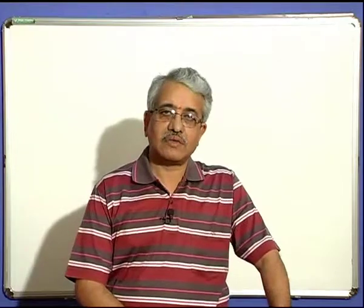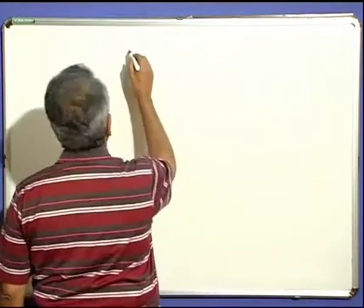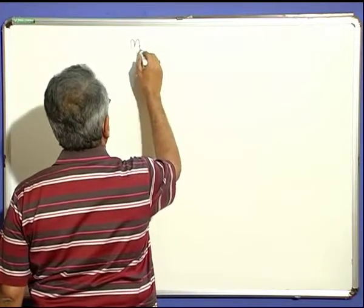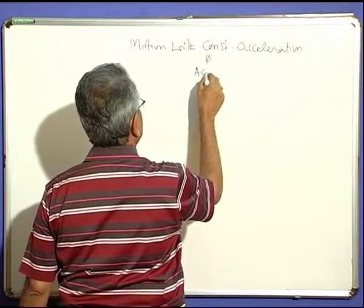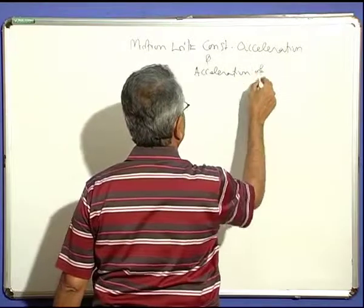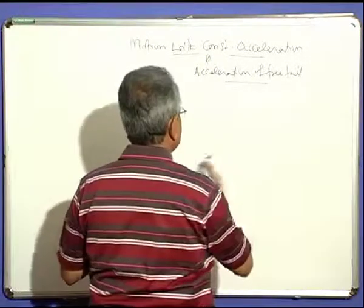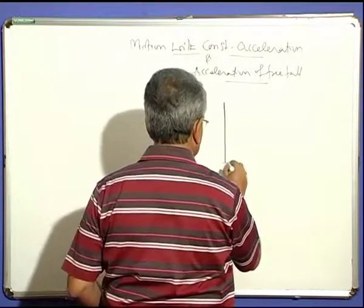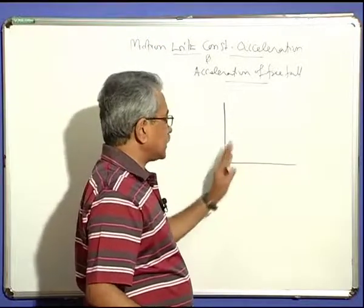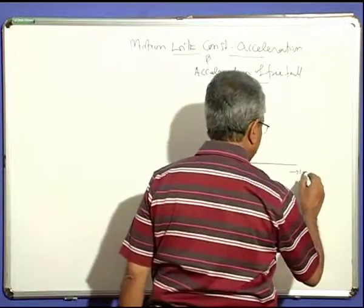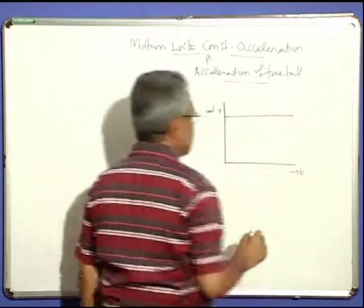We have seen the velocity-time curve earlier — how it gives the acceleration. Let us project our attention a little more on the graphical representation. The name of our module is therefore: motion with constant acceleration, and we also add acceleration of free fall. When acceleration is constant, the velocity-time graph will be a straight line. When velocity is constant, that straight line is horizontal, parallel to the time axis — constant acceleration, but zero.